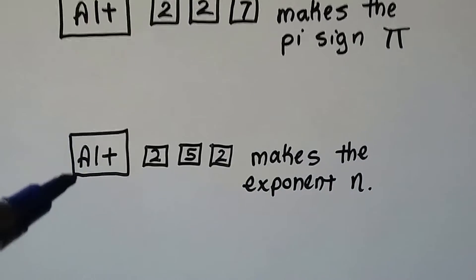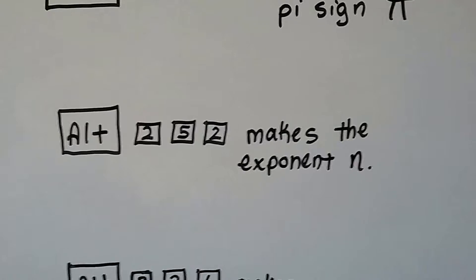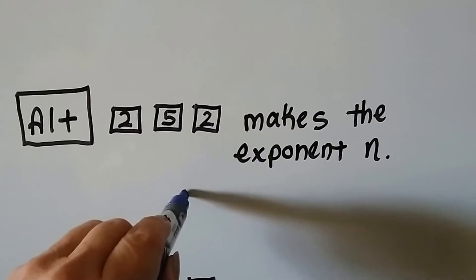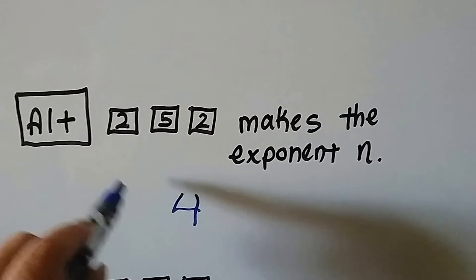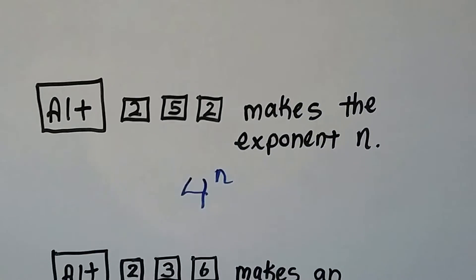If you hold down the ALT key and type 252, it'll make a little exponent n. So you'd be able to type a number and holding ALT 252, it would put a little n up here.